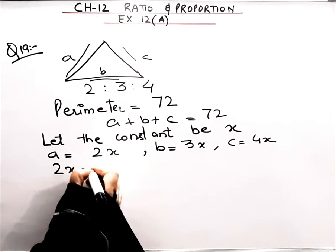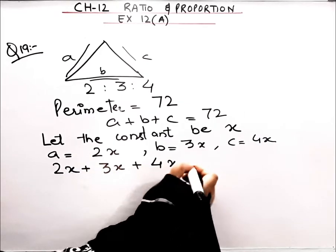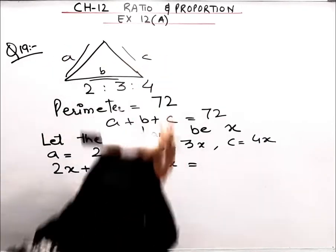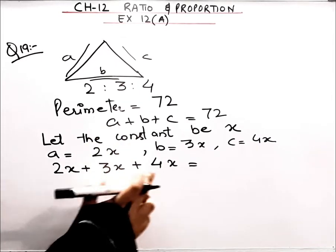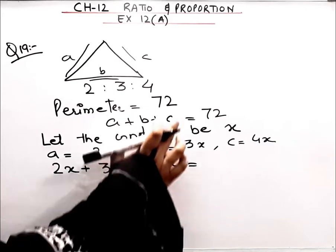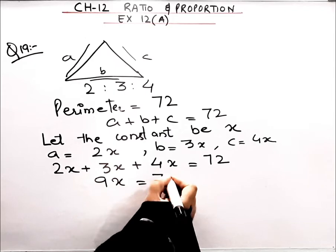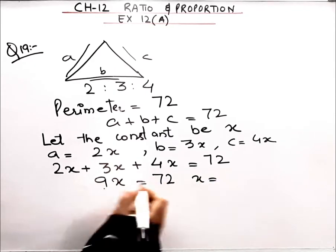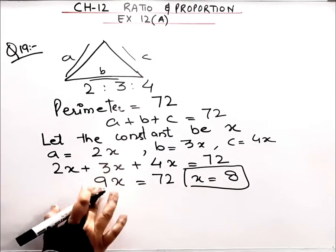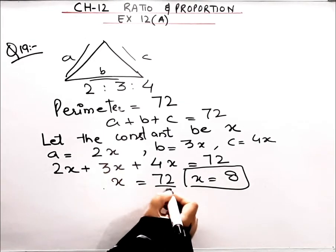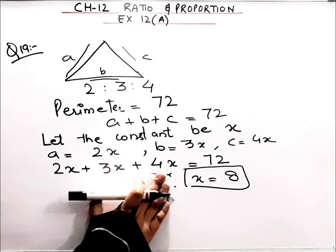Now, since the perimeter is given, I can sum all three sides: a + b + c = 72. I put 2x in place of a, 3x in place of b, and 4x in place of c. This gives us 9x = 72. Bringing 9 to the denominator, x = 72/9, so x = 8.